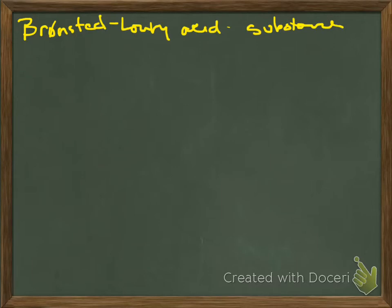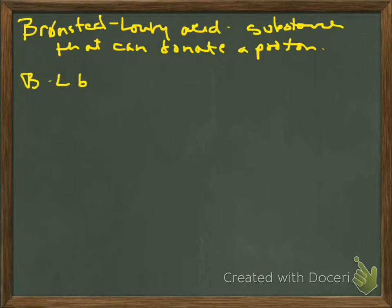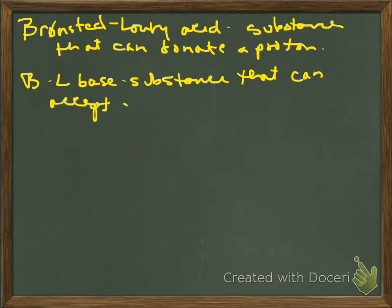Okay, so second definition is going to be the Bronsted-Lowry acid and base. This is a substance that can donate a proton. Okay, and then a Bronsted-Lowry base is a substance that can accept a proton.